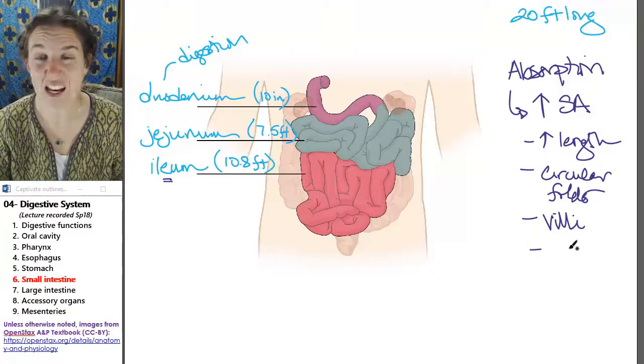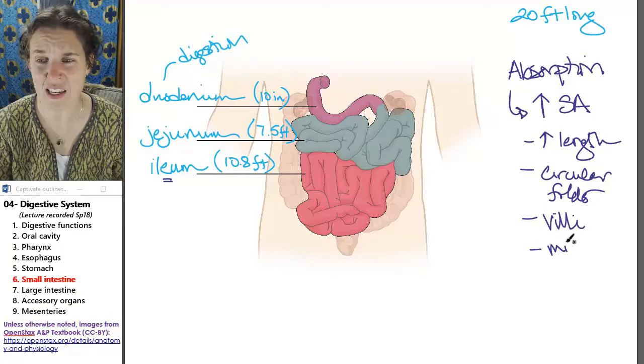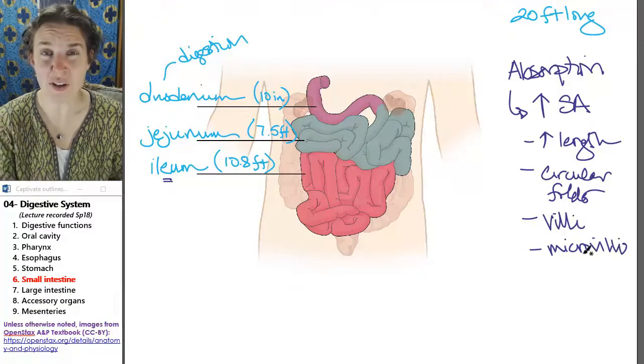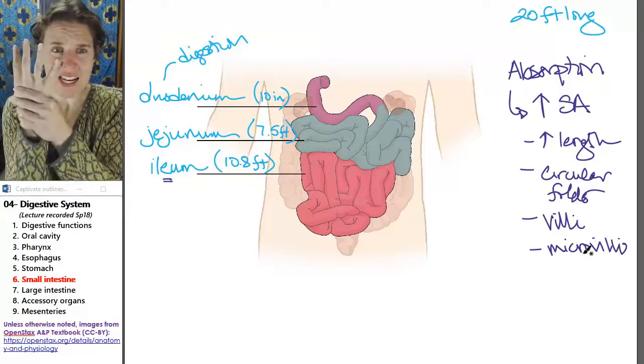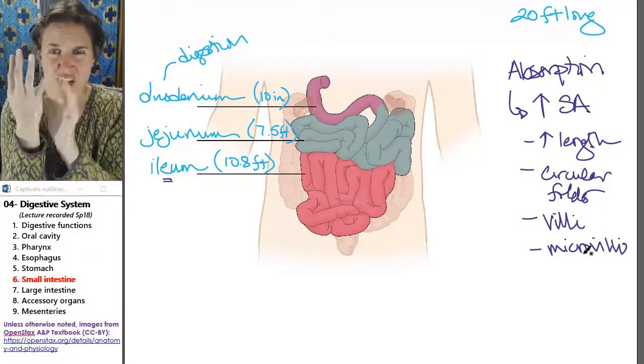And then on individual cells, you have things called microvilli. And those are projections on an individual cell.